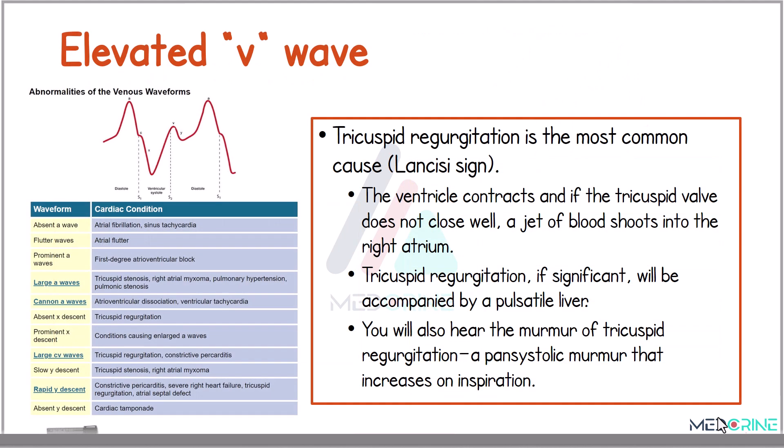An elevated V wave suggests tricuspid regurgitation. During ventricular systole, if the tricuspid valve is incompetent, blood regurgitates back into the right atrium, producing a prominent V wave known as the Lancisi sign. This may be accompanied by a pulsatile liver and a pan-systolic murmur which intensifies with inspiration.